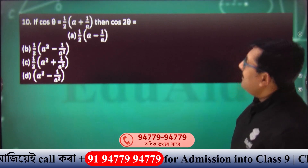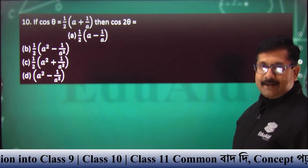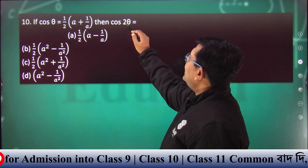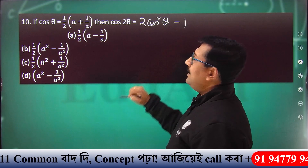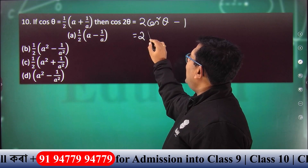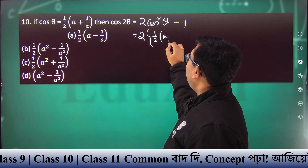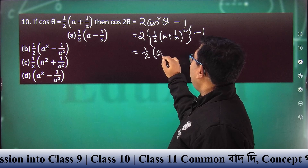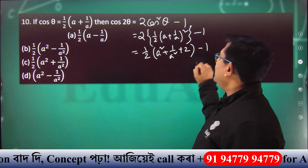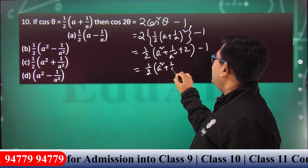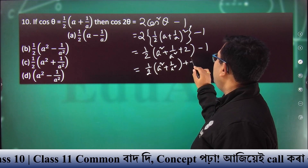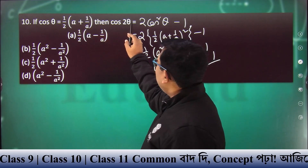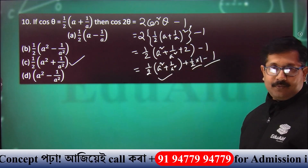Next thing is trigonometry: cos theta equals half of a plus 1 by a, then find cos 2 theta. cos theta equals half of a plus 1 by a. cos 2 theta equals 2 cos squared theta minus 1. So, 2 cos squared theta equals 2 multiplied by half of a plus 1 by a, the whole squared, minus 1. That equals one quarter multiplied by a squared plus 1 by a squared plus 2, minus 1. Applying distributive law: a squared plus 1 by a squared, half into 2 equals 1, minus 1 cancels, and the result is half of a squared plus 1 by a squared. So cos 2 theta equals half of a squared plus 1 by a squared.